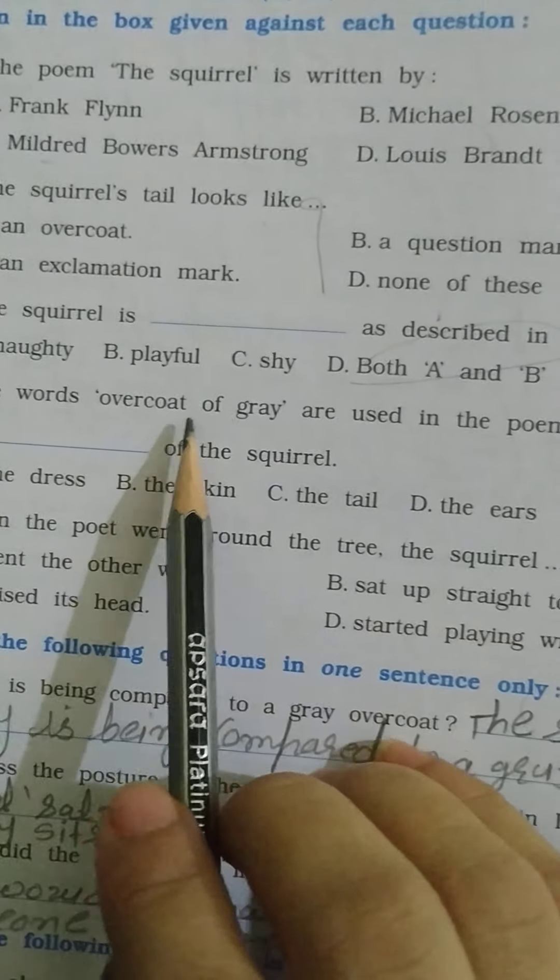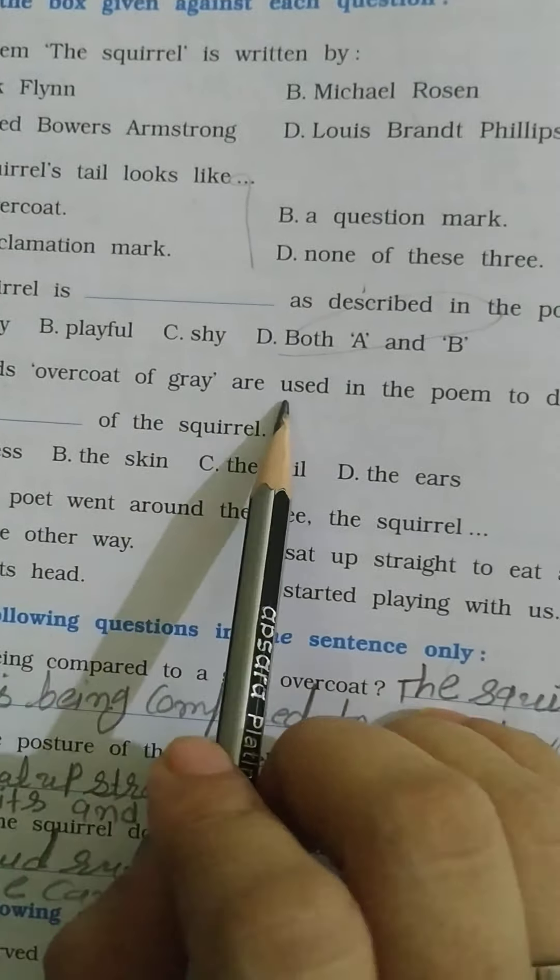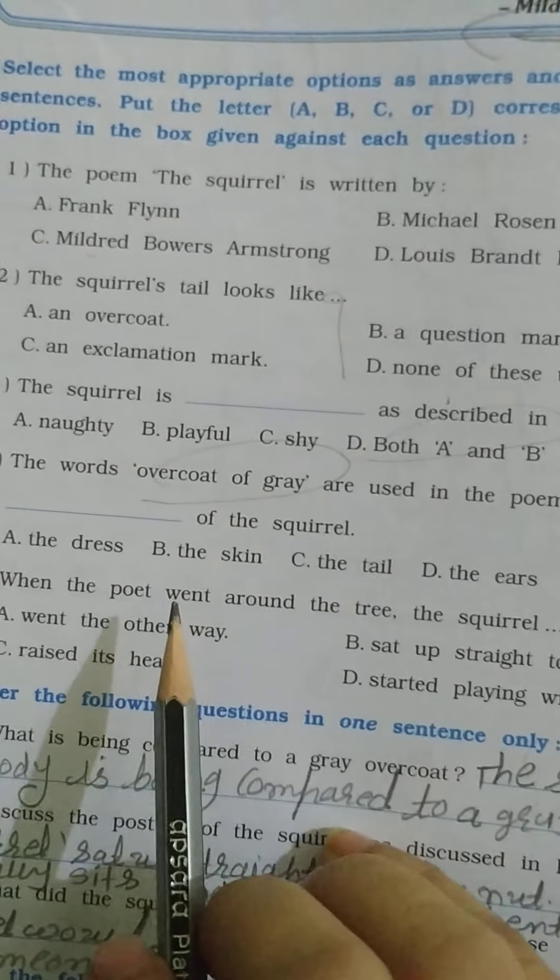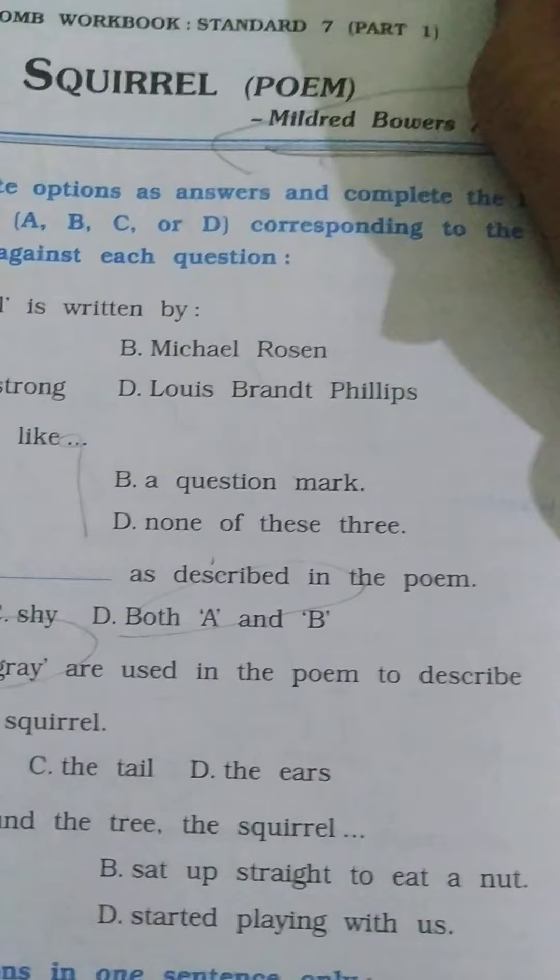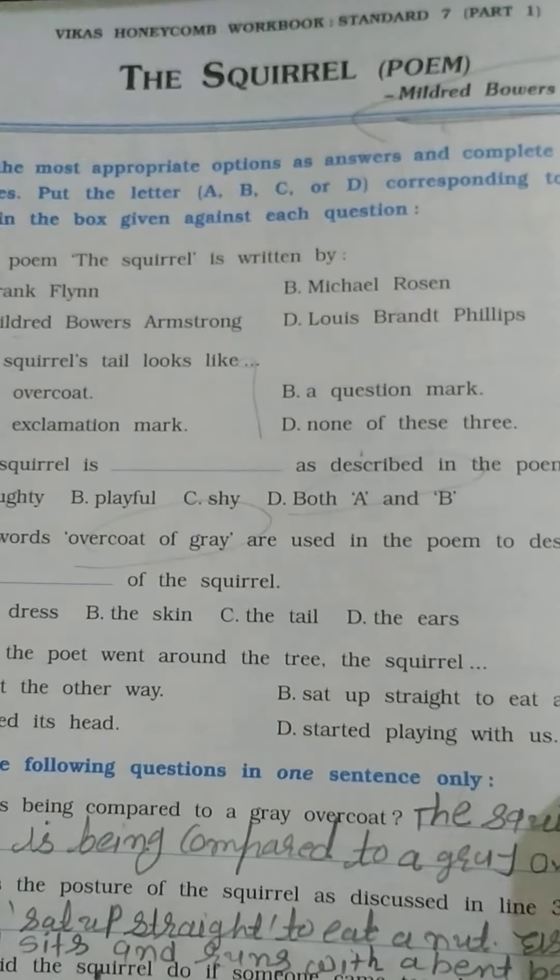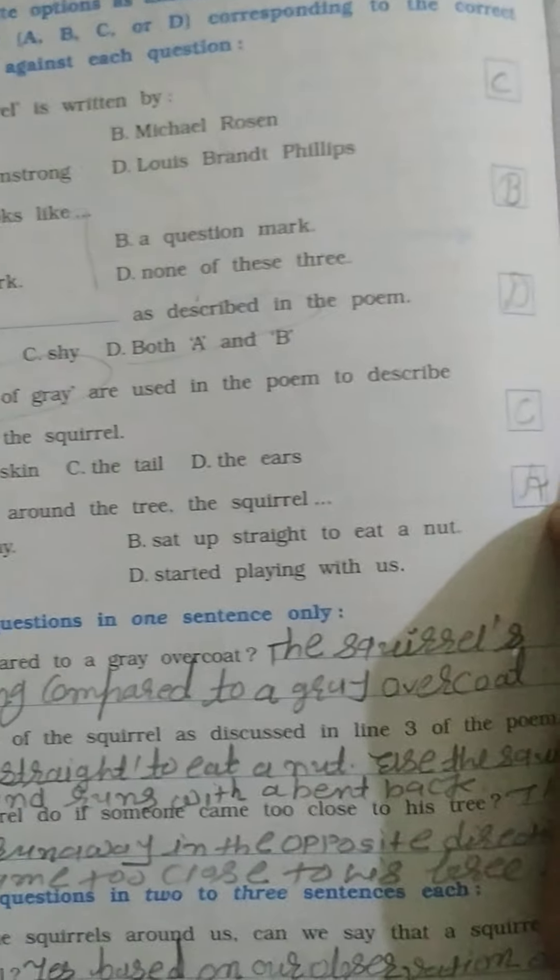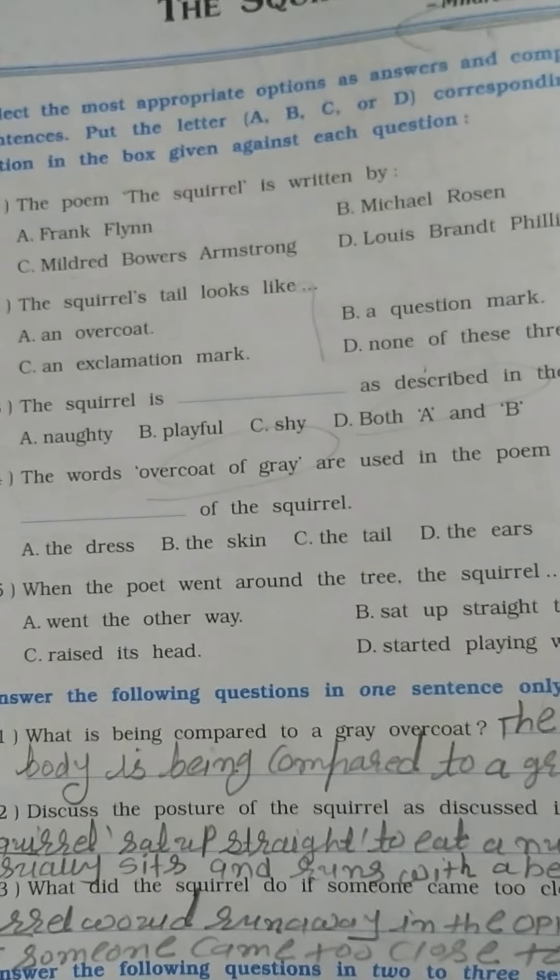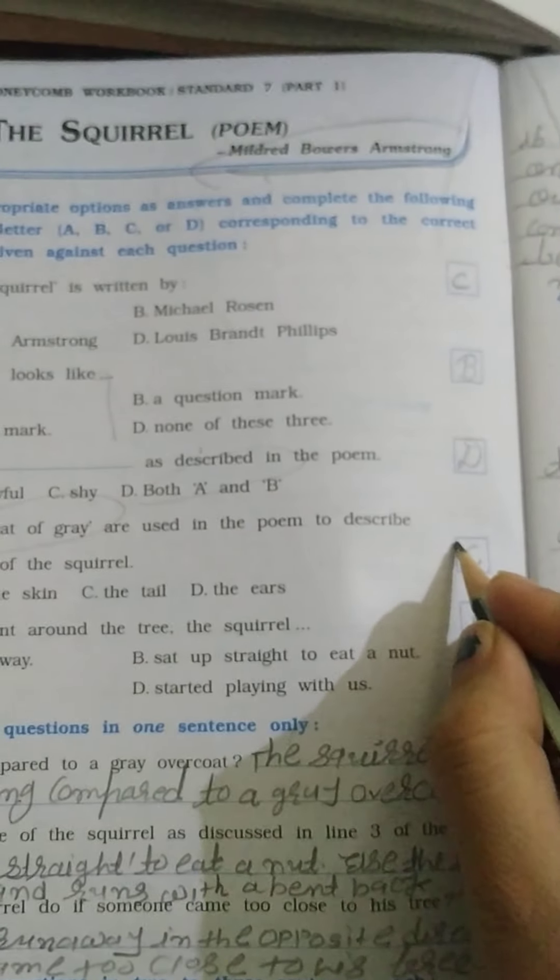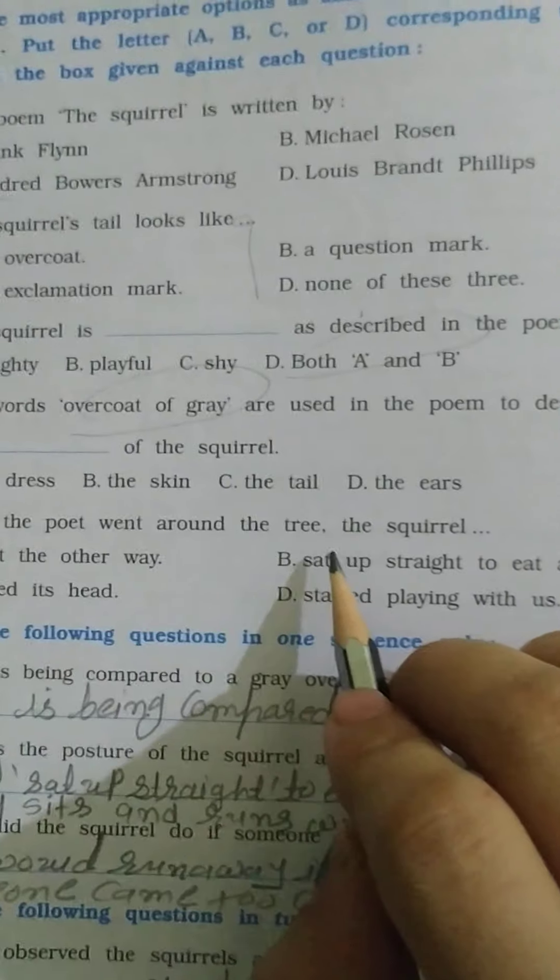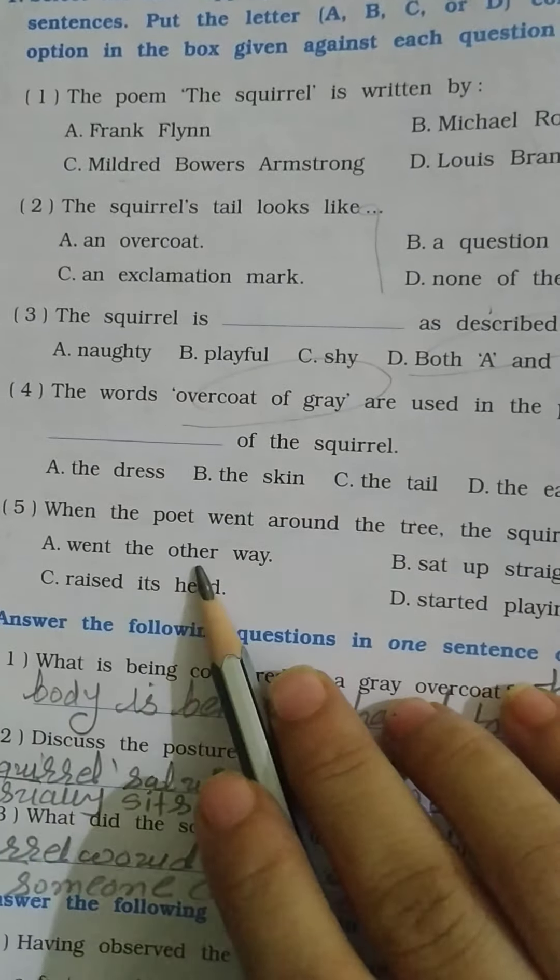The words overcoat of gray are used in the poem to describe the blank of the squirrel. The words overcoat of grey is what we have seen. When the poet went around the tree, the squirrel went the other way.